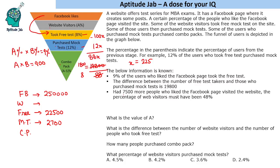With 2,50,000 Facebook page likers, 7,500 more website visitors represents 3 percent of 2,50,000. If a 3 percent increase makes the web visitor percentage 48 percent, then the initial value of A must be 45. Since A times B equals 900 and A is 45, B equals 20.